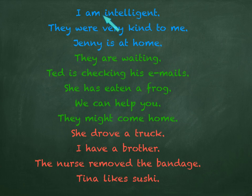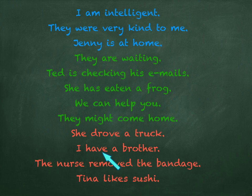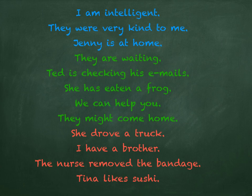Notice that these verbs — am, were, and is — are simple be verbs. But in these two cases, they are helping verbs for the main verbs wait and check. And this is the same here too. Have, in this case, is a general verb, but here it's a helping verb, in that rather strange sentence: she has eaten a frog.